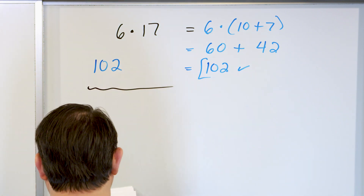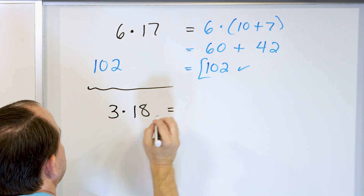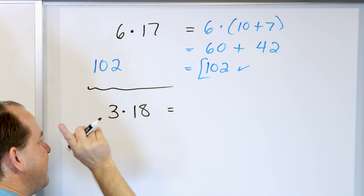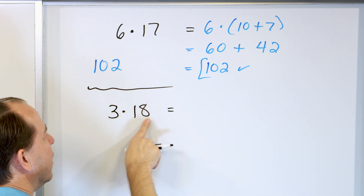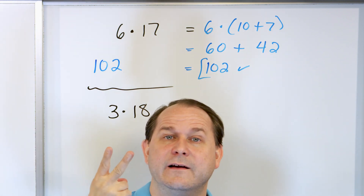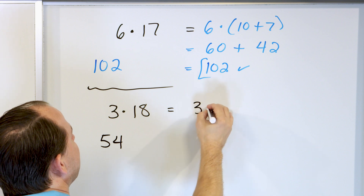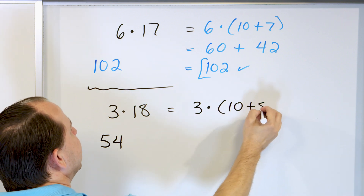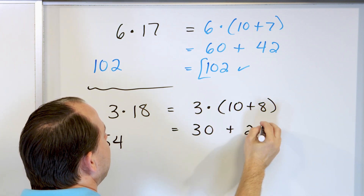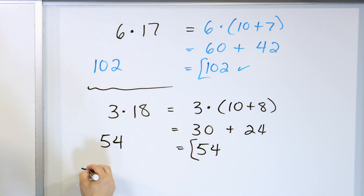I encourage you to pause the video when I write it down and see if you can get it correct. If you don't, it's okay — it takes practice. 3 times 18. 3 times — this 1 is really 10 — so 3 times 10 is 30. Keep that in your mind: 30. Then 3 times 8 is 24. 30 and 24: starting at 30, then 40, then 50, then 4 — 54. Let's verify: 3 times, this is worth 10 plus 8. We multiply 3 times 10 and get 30. We multiply 3 times 8 and get 24. Start from 30 and go up: 40, 50, 4 — 54. That's the right answer, and we got it in our mind.